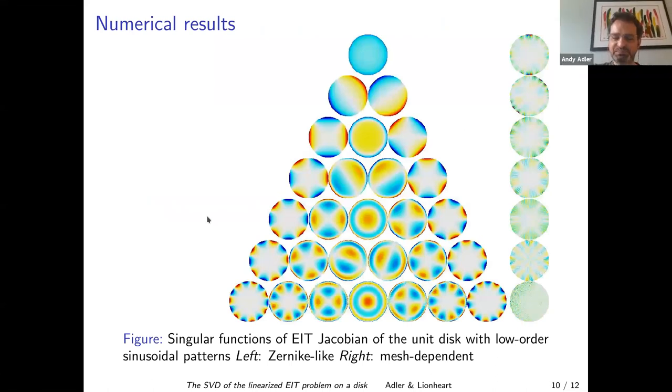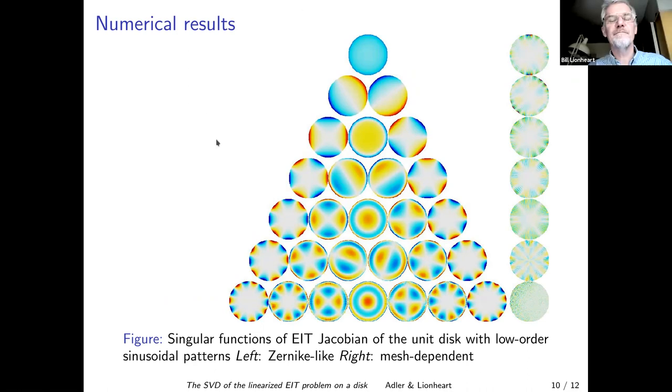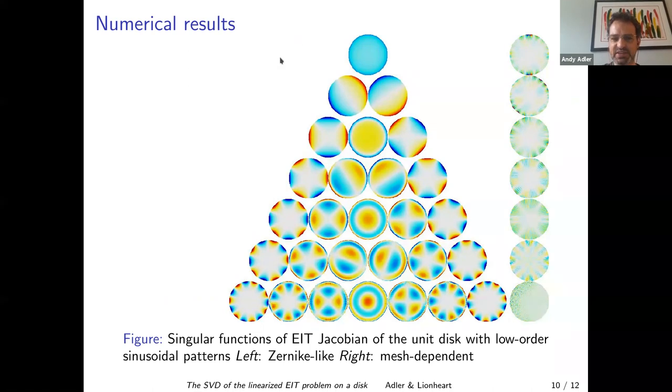Here we see some pretty pictures. What they are is the singular functions. So we take the SVD of the Jacobian matrix of EIT on a unit disk and represent it as an image. We get this nice structure where the low order singular matrices, singular vectors look like Zernike polynomials. We also get a number of higher order mesh dependent shapes. On the right-hand side of the screen we see these mesh dependent shapes and those change as we make the discretization more fine.